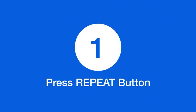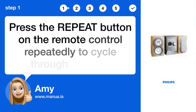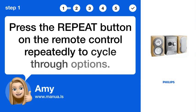Step 1. Press the REPEAT button. Press the REPEAT button on the remote control repeatedly to cycle through options.